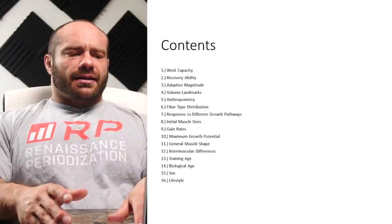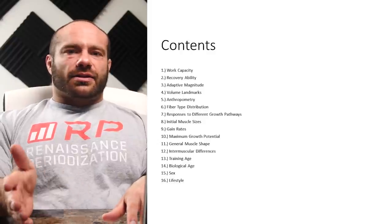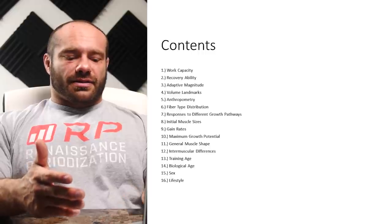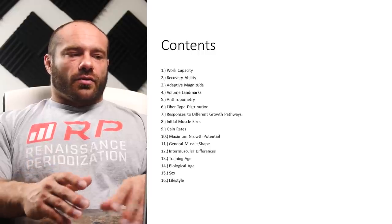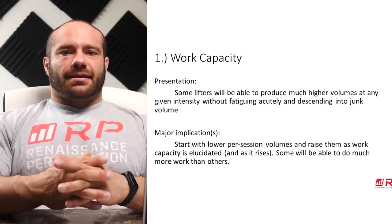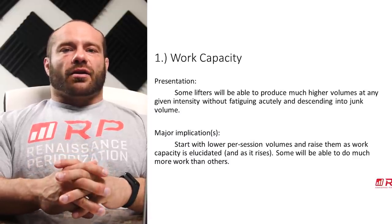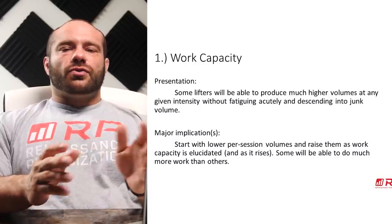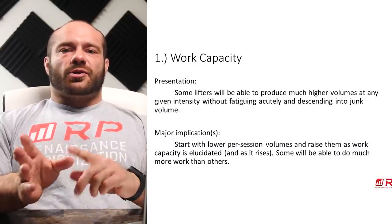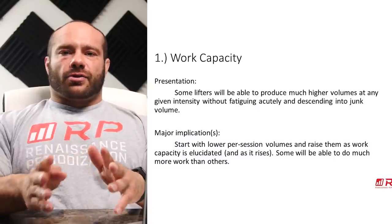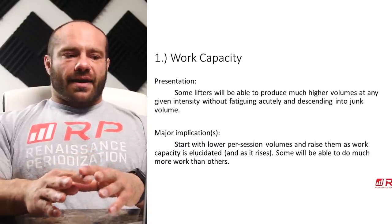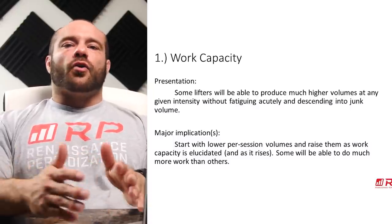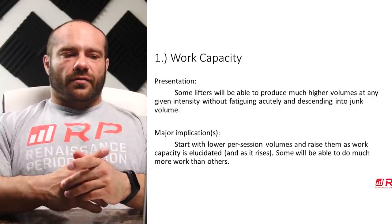After this lecture, you should have a much more nuanced view of program design. When someone says individual differences matter, you'll understand how they matter and have a really good toolbox to apply when you design your own program or evaluate a program. These are not necessarily in order of importance, but probably the more important ones are first. So work capacity is our first variable. For each one we'll do two breakdowns: presentation — how it presents in the training sphere — and major implications.